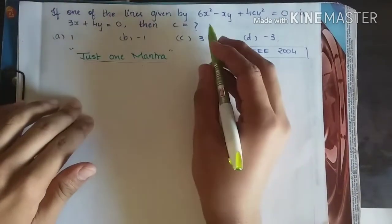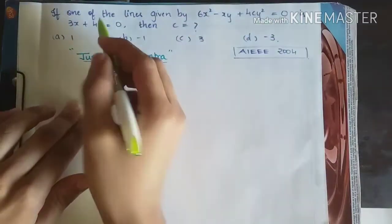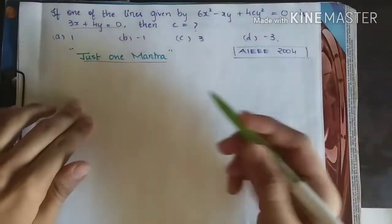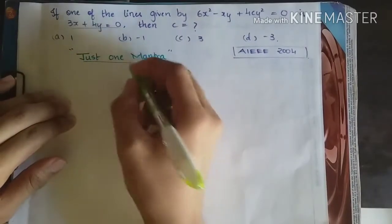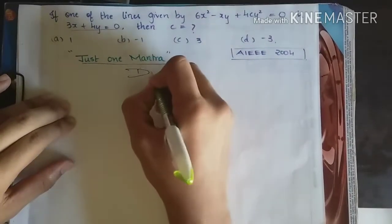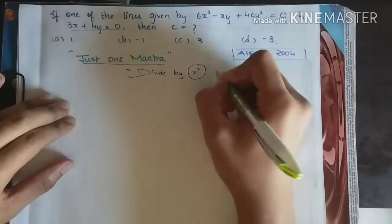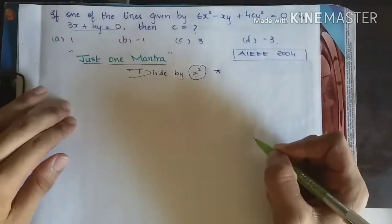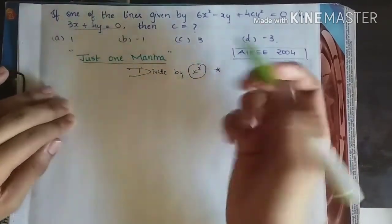If one of the lines given by 6x square minus xy plus 4cy square equal to 0 is this line, 3x plus 4y equal to 0, then what is the value of c? So now let's see what is the mantra. That is divide by x square. This is very important. So how does that help? How does dividing by x square help us? So let's see.